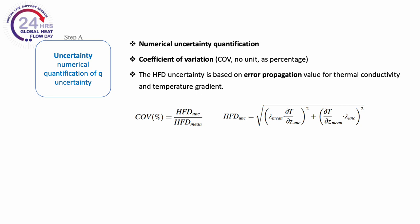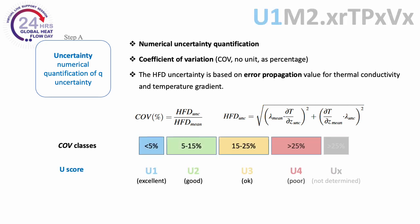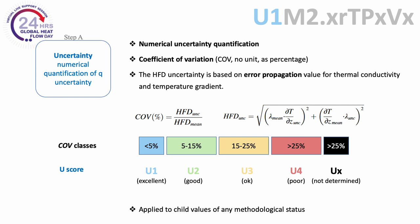The first step in determining the quality of a heat flow value is based on calculation of the uncertainty in the value. This uncertainty is computed as the relative coefficient of variation of the heat flow data uncertainty, which is based on full error propagation of the thermal conductivity and temperature gradient measurements. The coefficient of variation is used to determine the class of the U score, with U1 being the best score with the lowest variation, and the worst score of UX being assigned when the variation cannot be determined. This numerical uncertainty quantification applies to all child elements in the database.